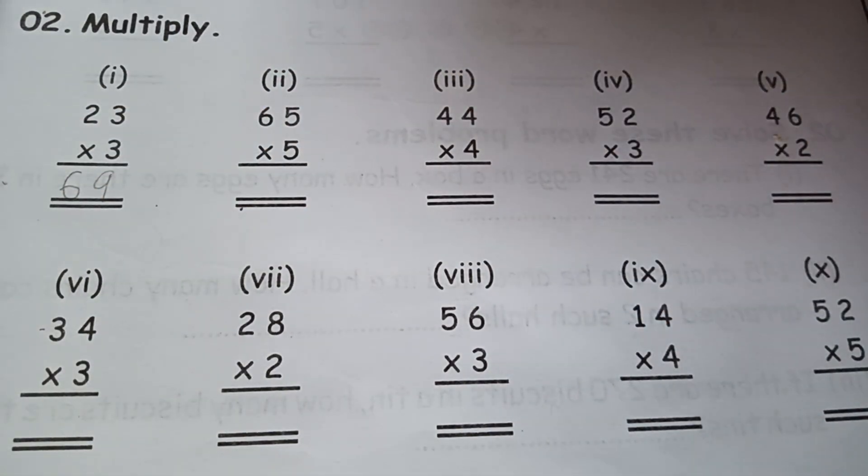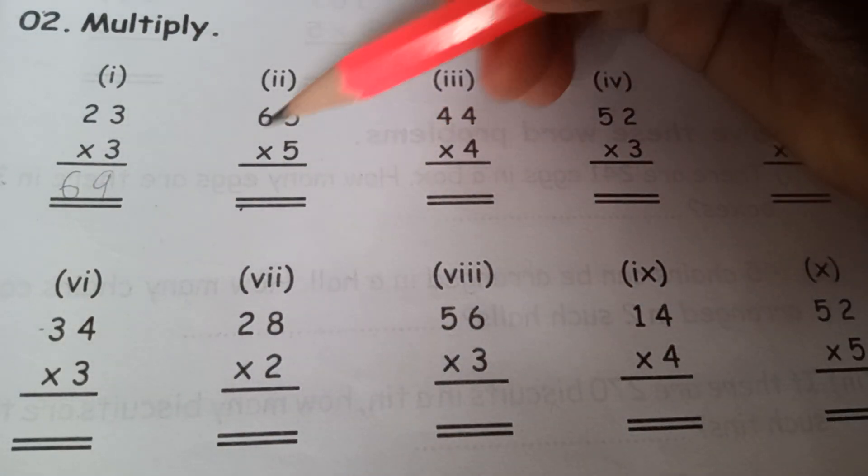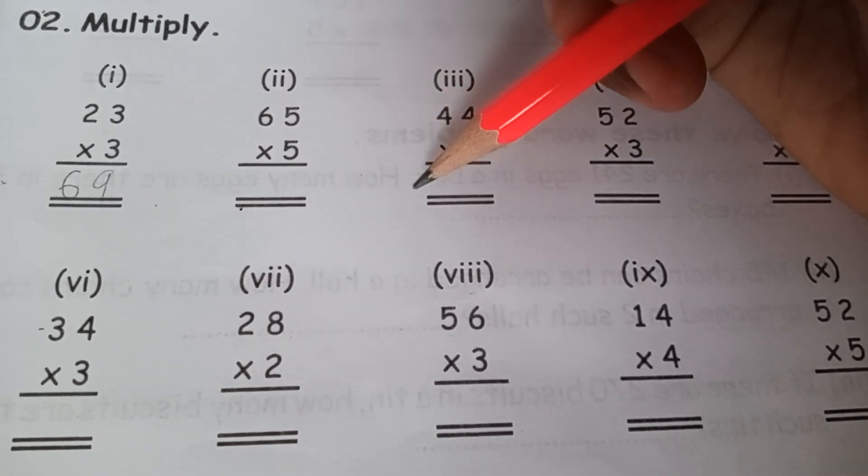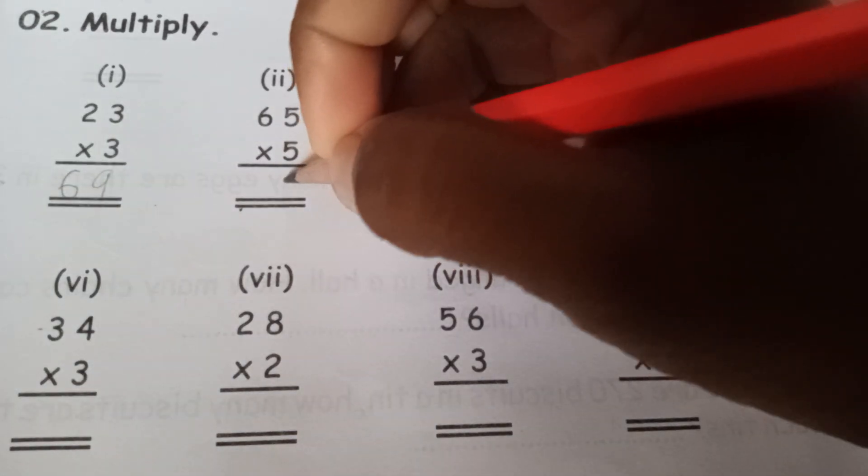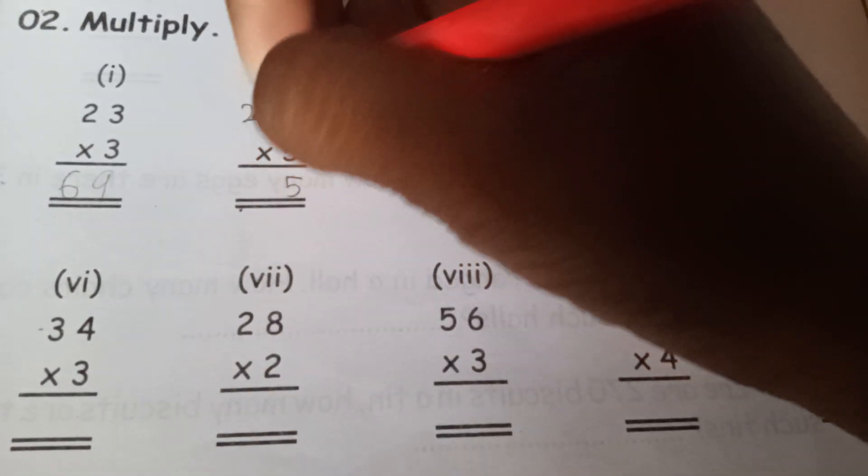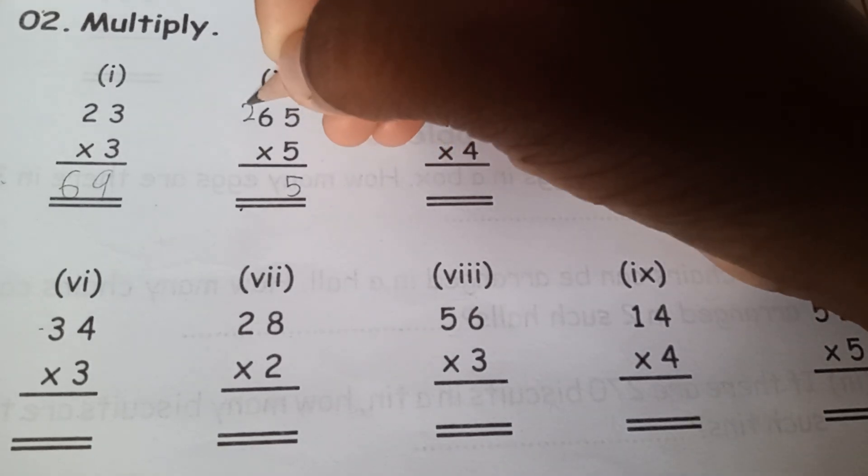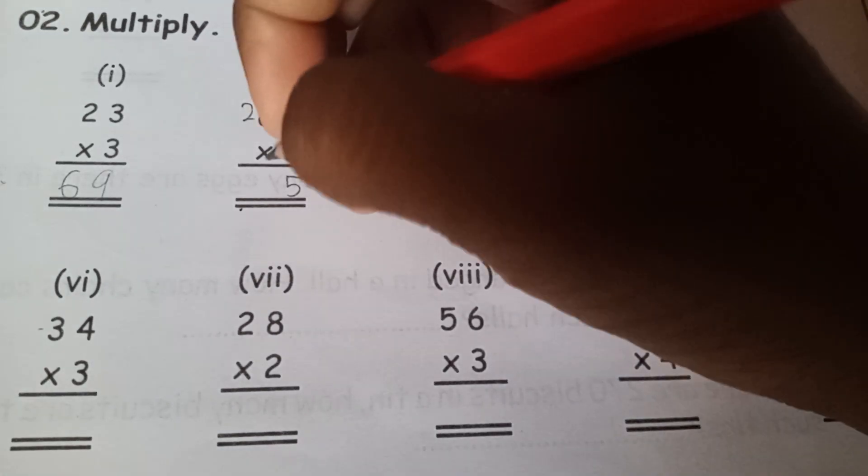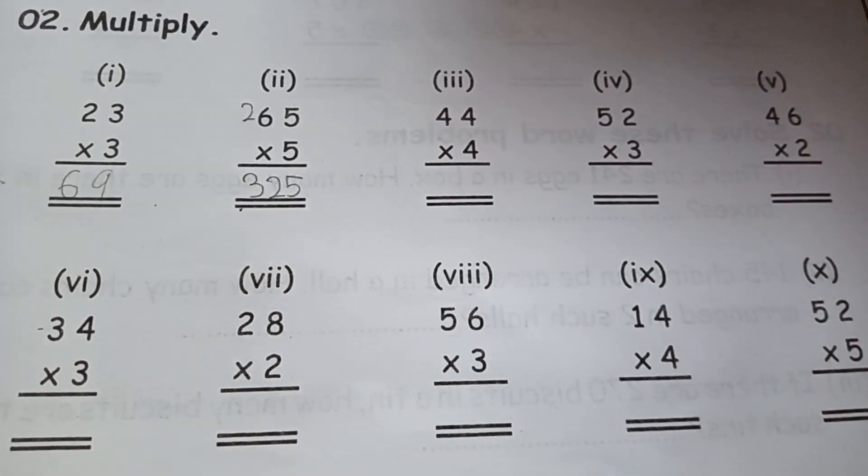Read the next one: 65 times 5. Explain how to do the multiplication. 5 times 5 is 25, so the 5 will be here and 2 will be going up. 5 times 6 is 30, so this 2 plus 30, plus 2 is 32. So the answer will be 325. Good.